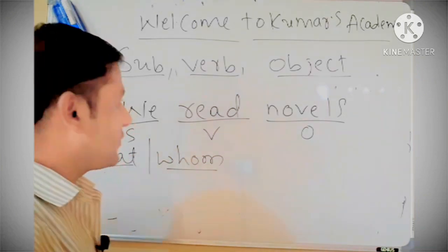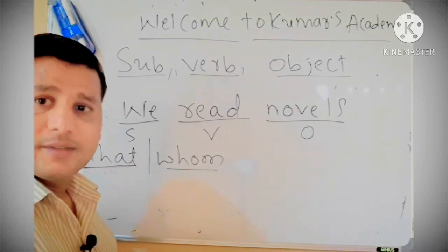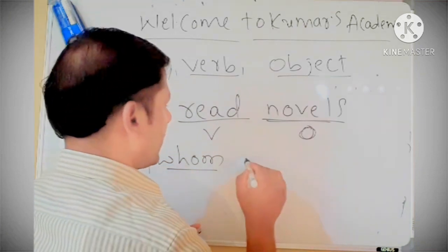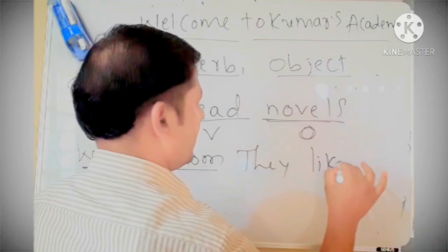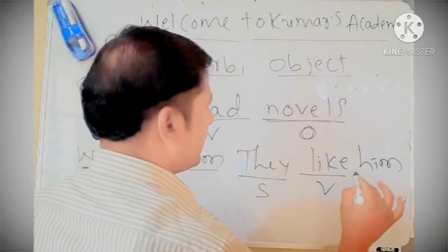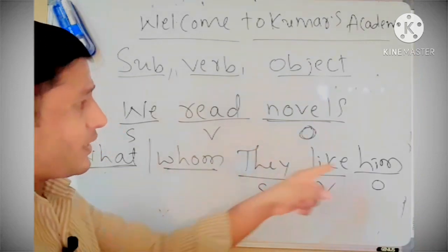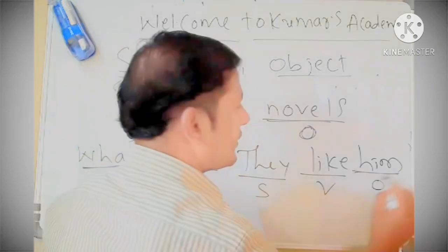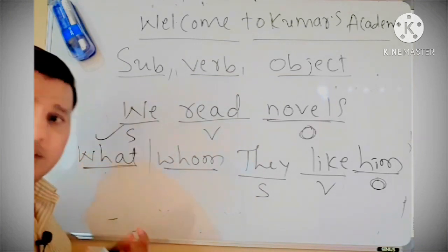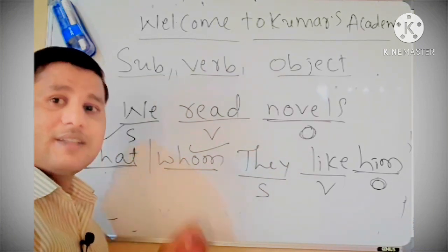Now I will ask a question: we read novels. What do we read? Novel. Novel is the object. Next sentence: They like him. They is a subject, like is a verb, him is object. Why object? We have to ask a question: whom do they like? Him. They like him. When you have to ask a question — if there is a thing, we ask what; if there is a person, we ask whom. When you get the answer from these two questions, that is called object.